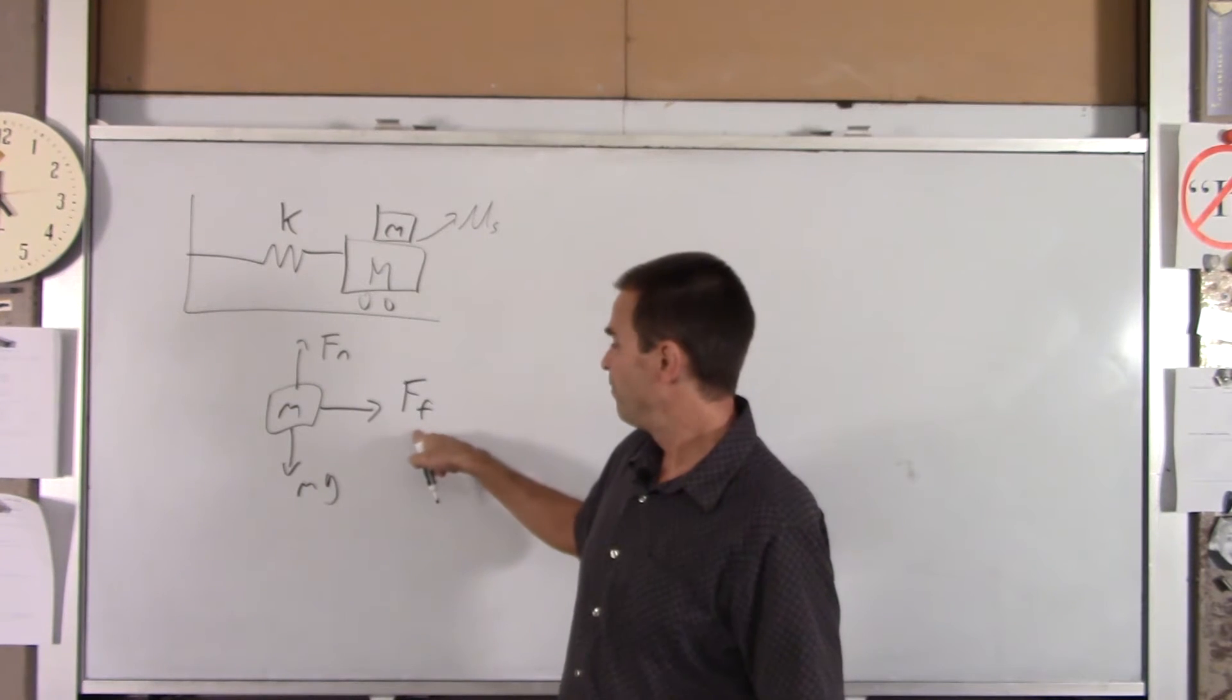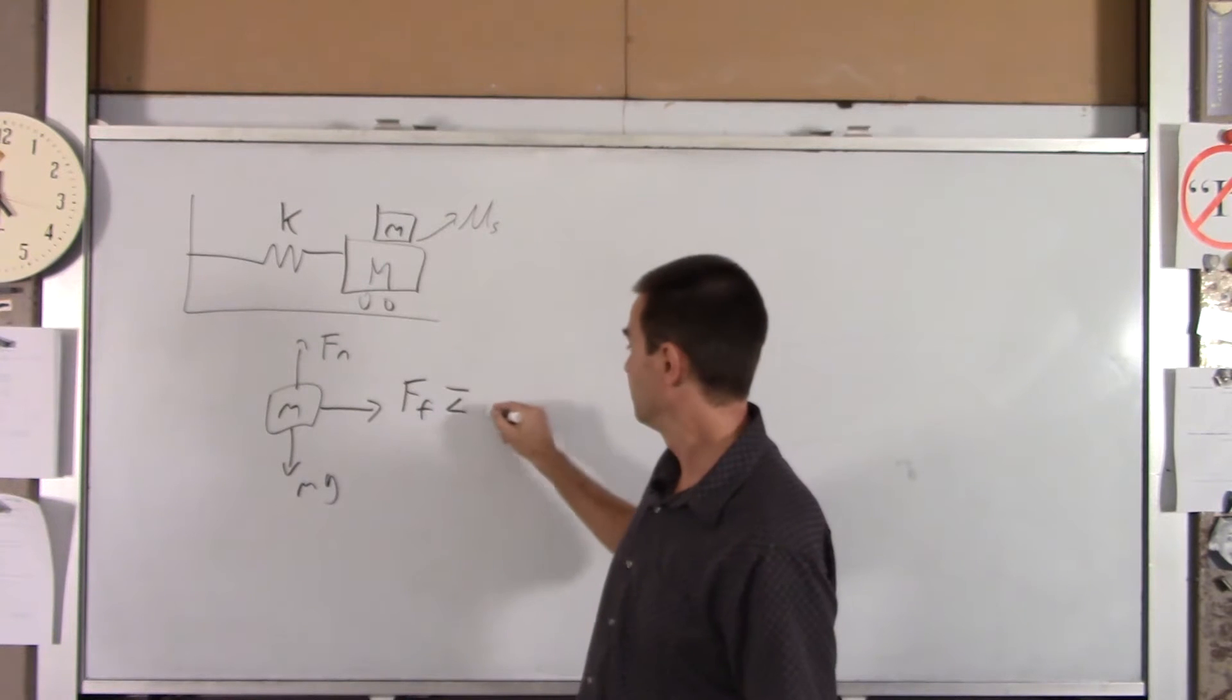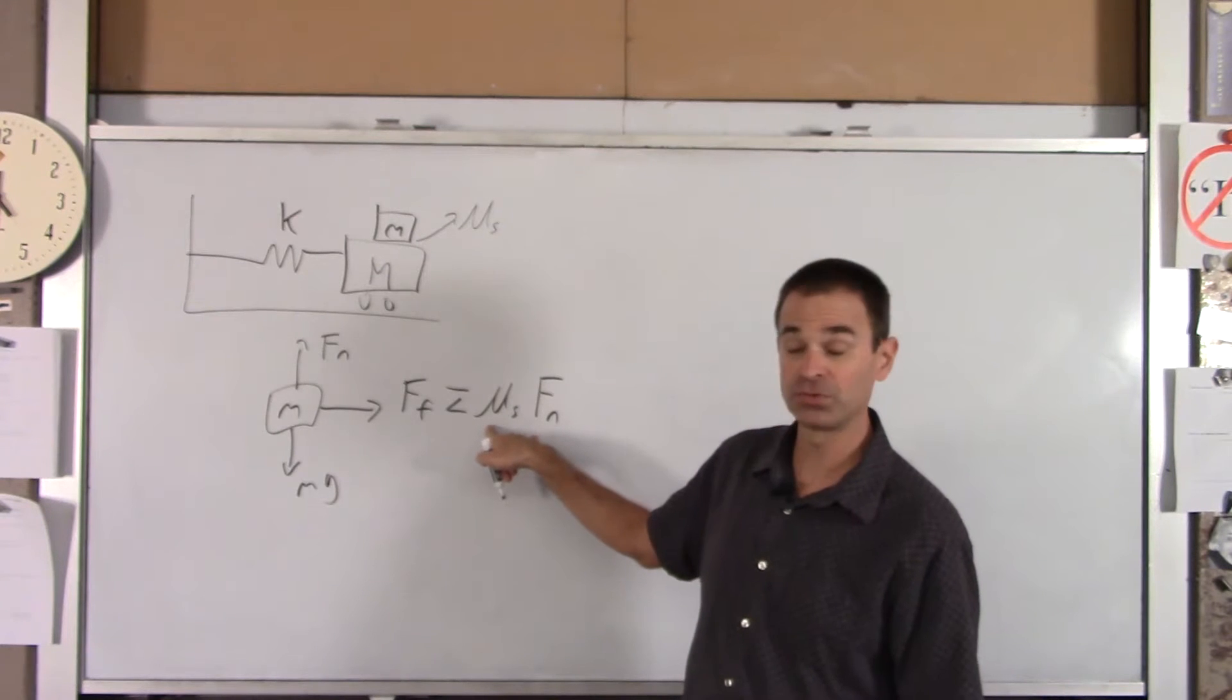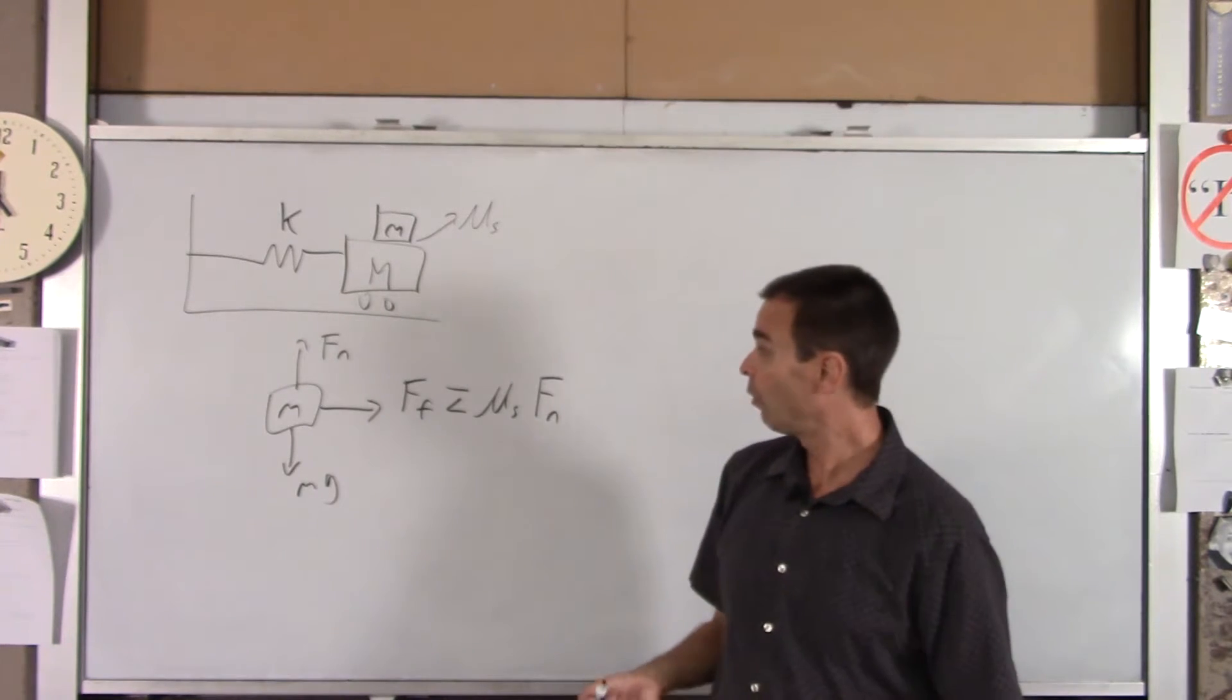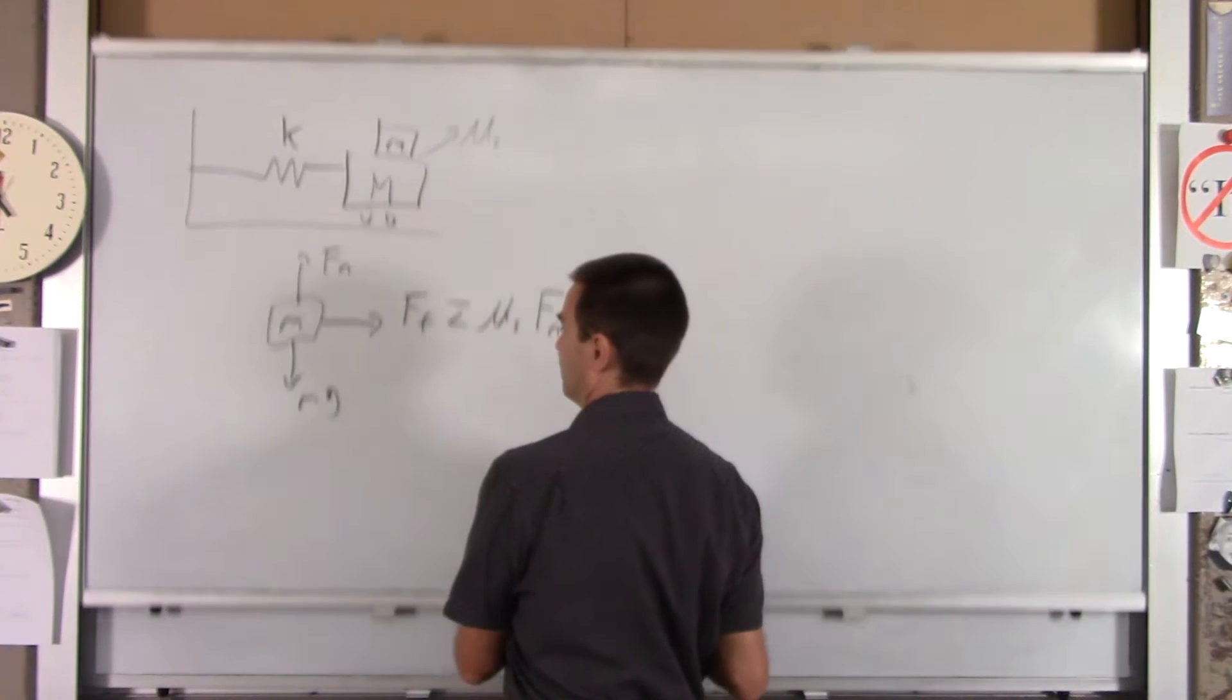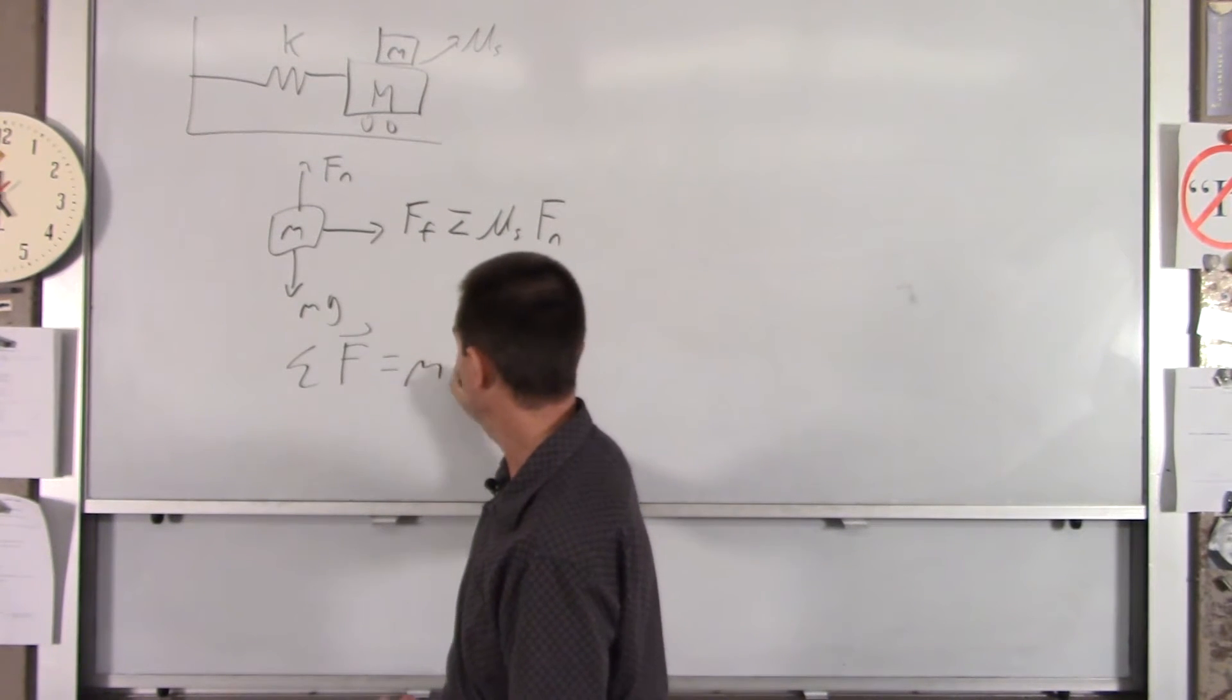The force of friction is equal to or less than mu sub s Fn. This is the max value for the force of static friction. Remember, static friction can range from zero to a max value. Well, we want the max value, so I'm going to use the equal part of this. And basically, I'm going to use Newton's second law, and that force equals ma.